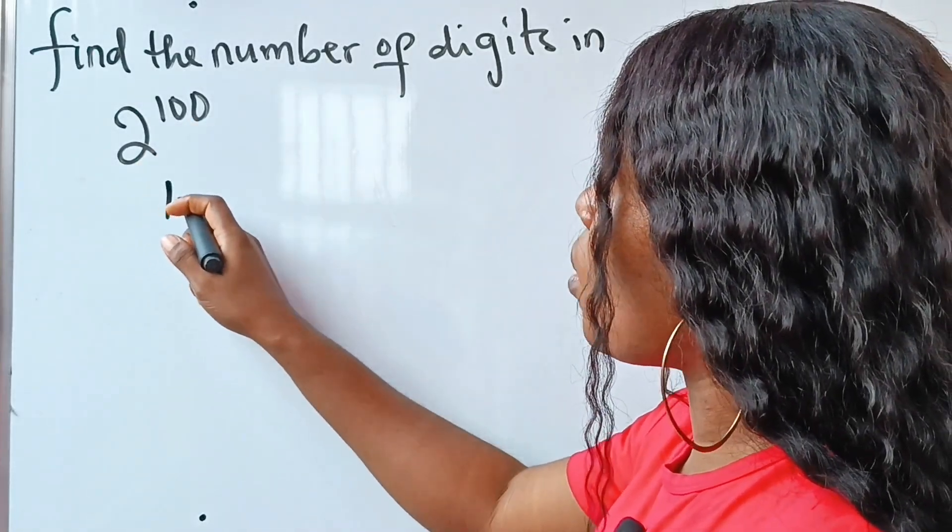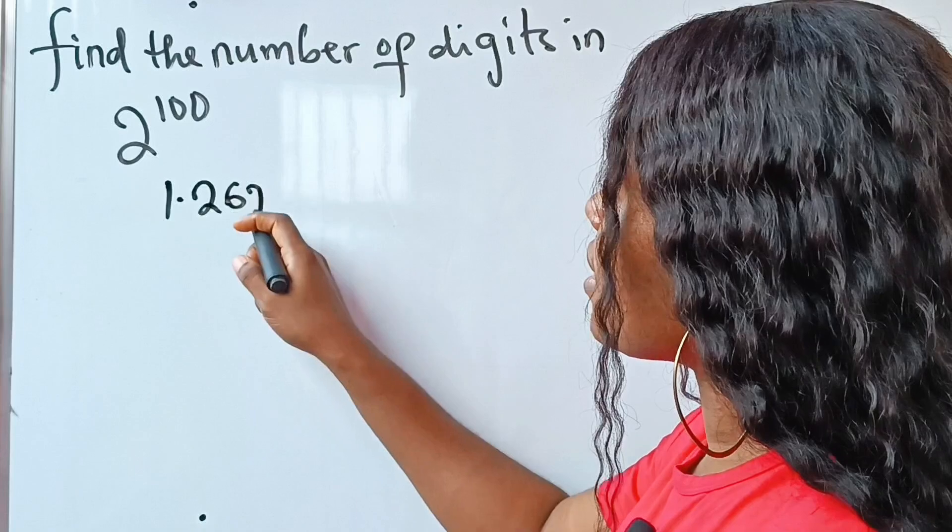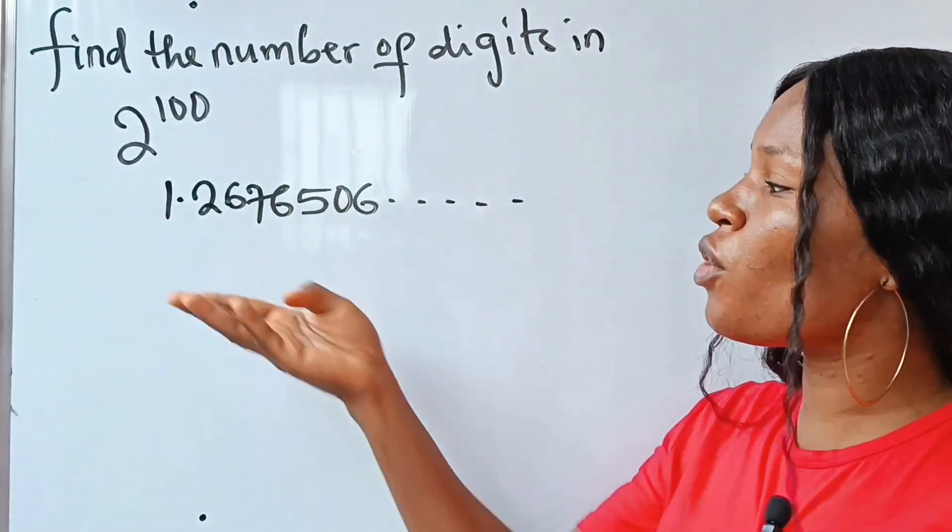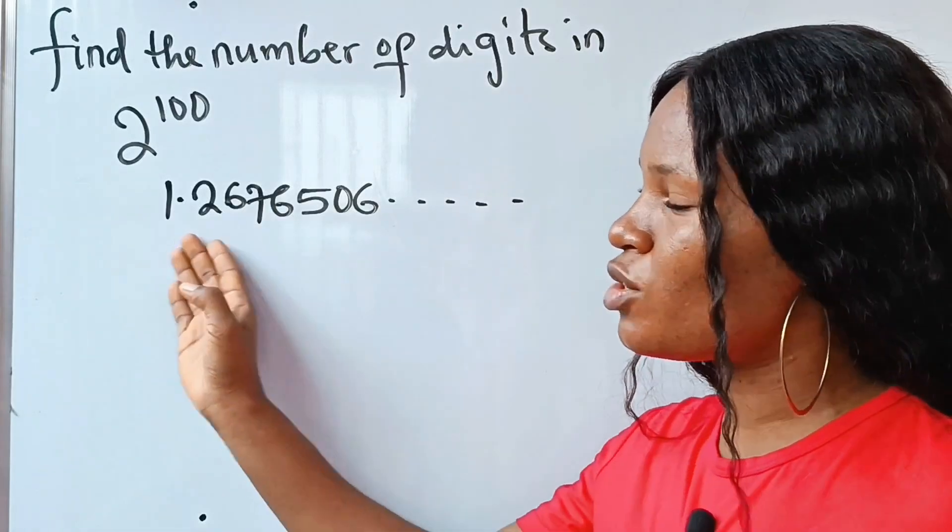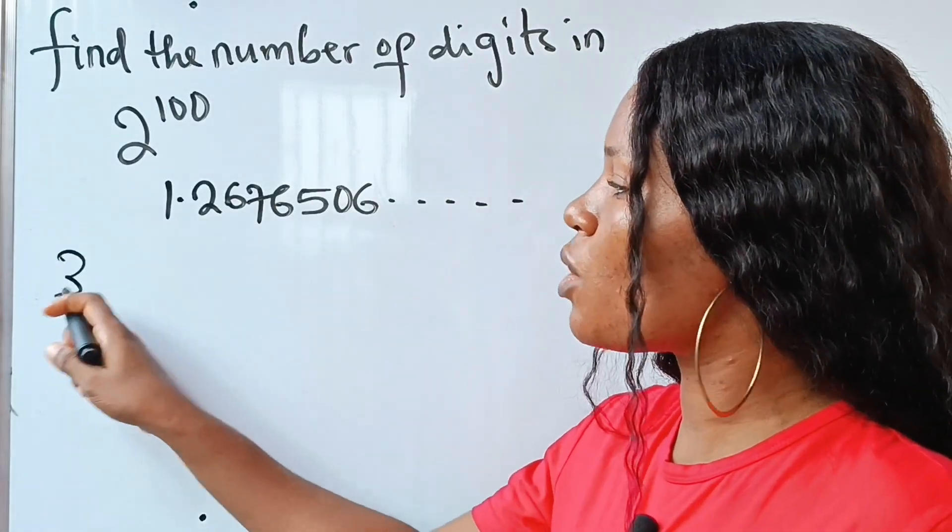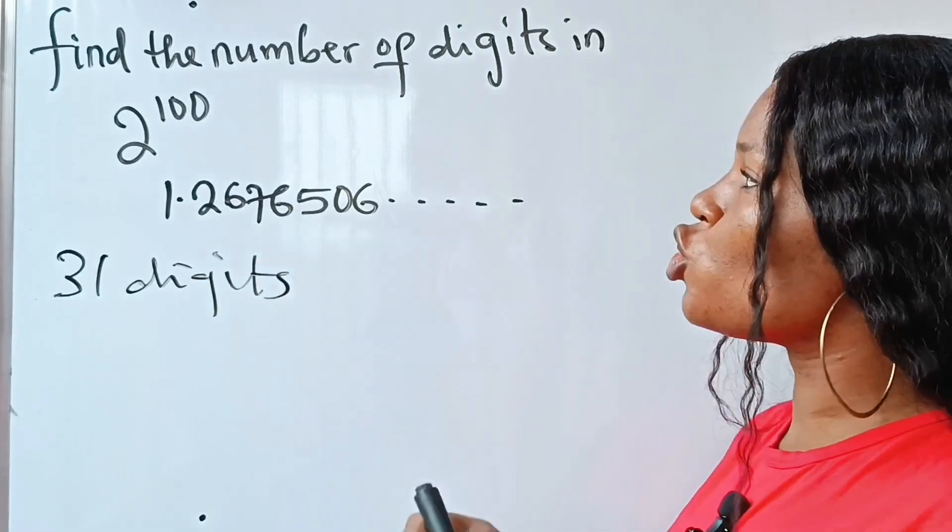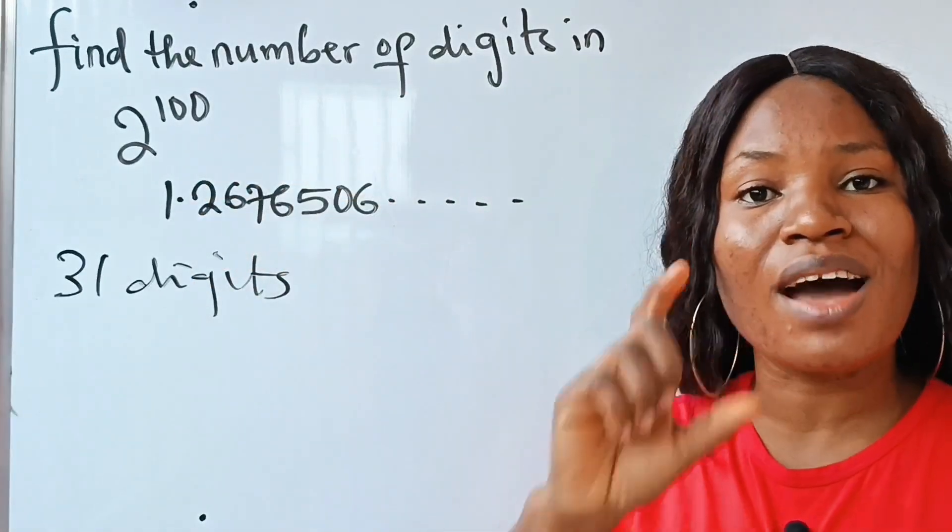The number you will get is 1.2676506 and the number continues. If you count the number of digits in this number, you will count 31 digits. Now the question says that you should find the number of digits in this without a calculator.